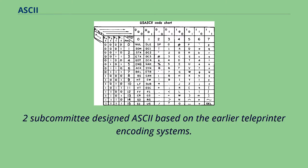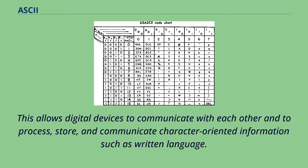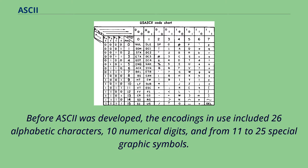The X3.2 subcommittee designed ASCII based on the earlier teleprinter encoding systems. Like other character encodings, ASCII specifies a correspondence between digital bit patterns and character symbols. This allows digital devices to communicate with each other and to process, store, and communicate character-oriented information such as written language. Before ASCII was developed, the encodings in use included 26 alphabetic characters, 10 numerical digits, and from 11 to 25 special graphic symbols.